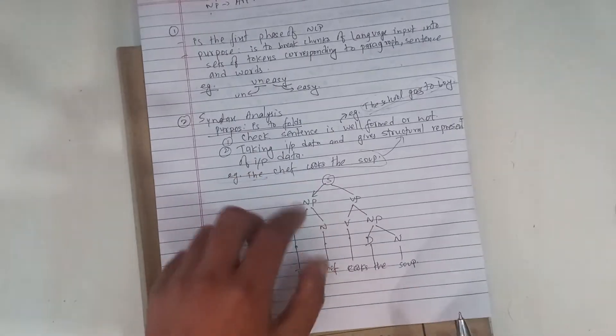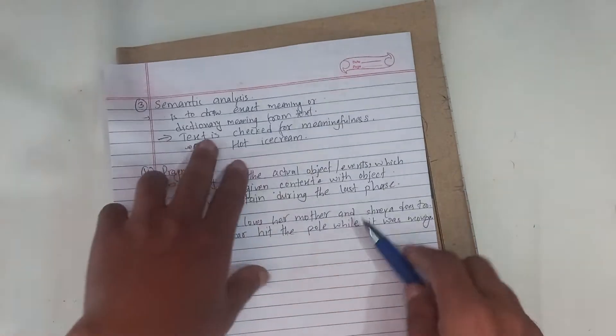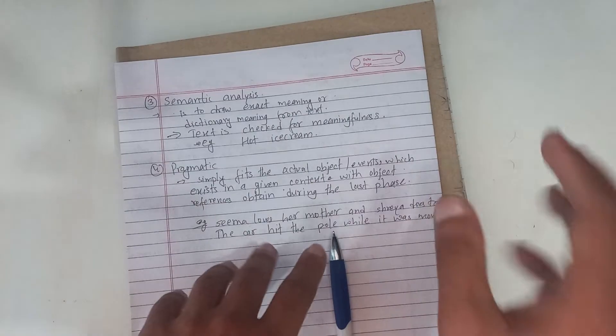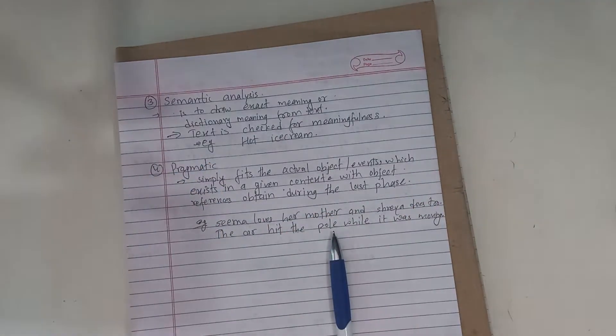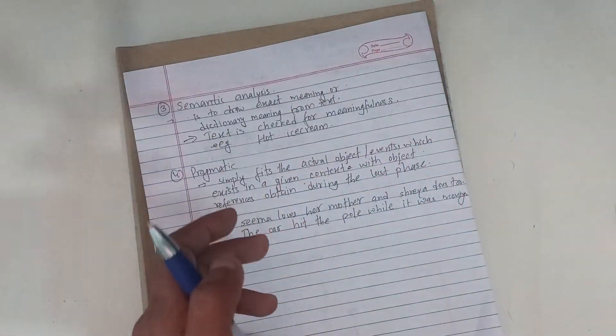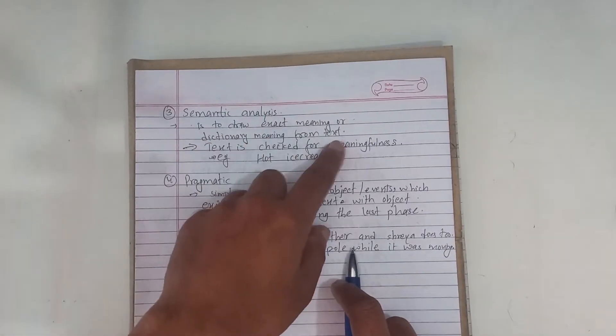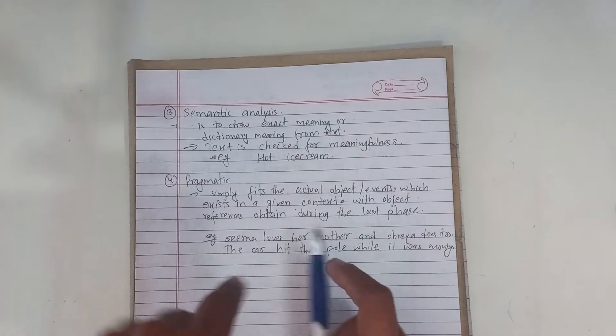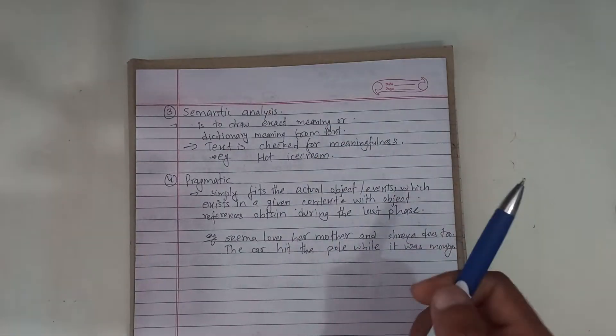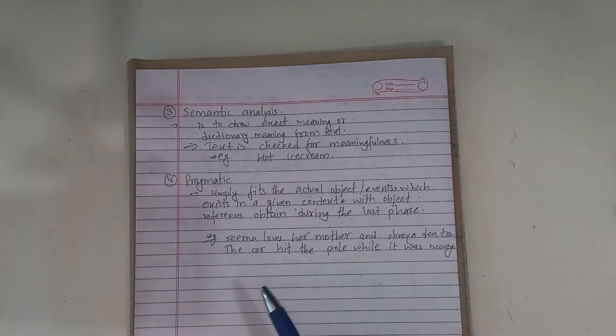Semantic analysis is to draw exact meaning or dictionary meaning from the text. The text is checked for meaningfulness. For example, 'ice cream cold of fire' or 'art ice cream' - these are meaningless, invalid.